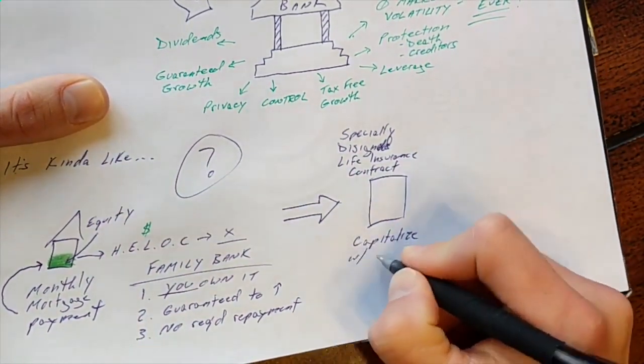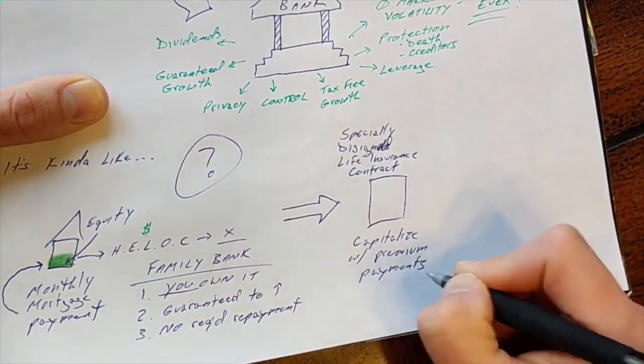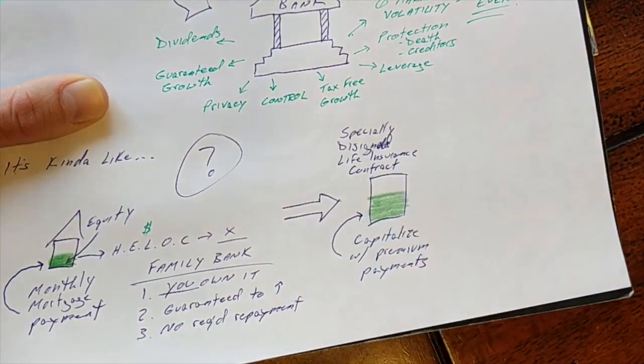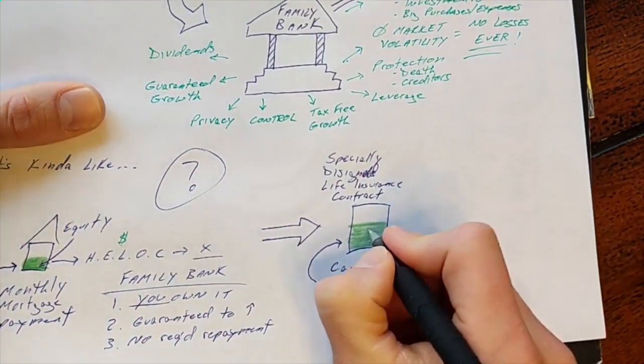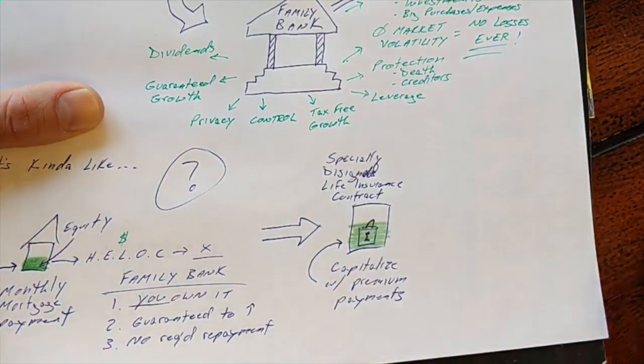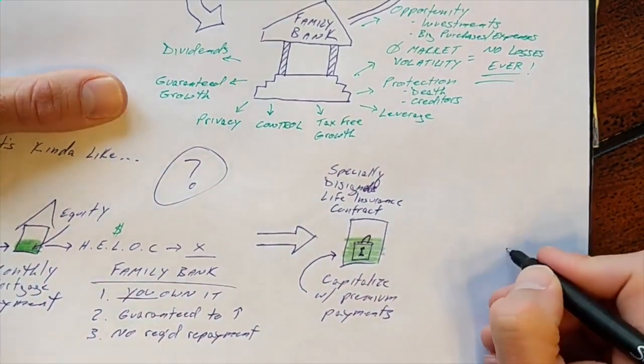How it works is you capitalize your policy with premium payments. With each premium payment, a large portion of that goes towards cash value in your policy. Once it's in there, it's locked in for good. It can never decrease in value, and it will never come out of there.